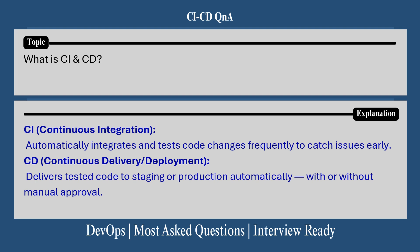Before we start with the question and answer, let me give you a one-line overview of what CI and CD are. CI is continuous integration, which means it automatically integrates and tests code changes frequently to catch issues early. CD is continuous deployment or delivery — it delivers tested code to staging or production environments automatically, with or without approval.